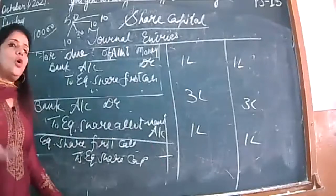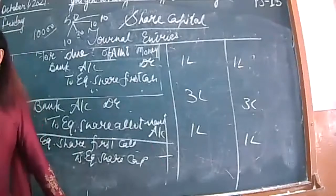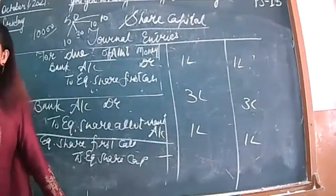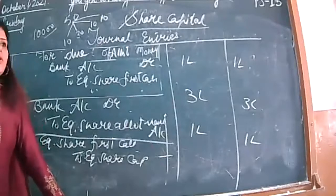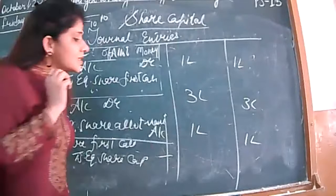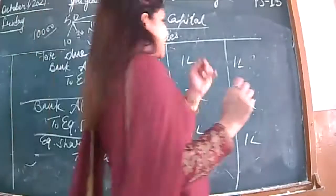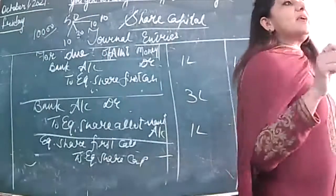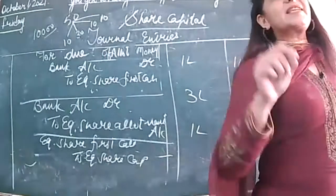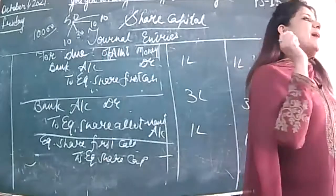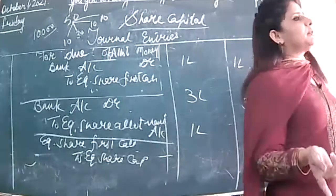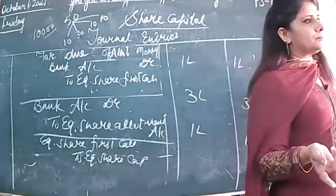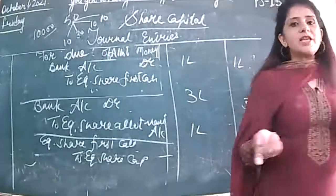Overall, there are 8 entries in which the question has been answered. Simple question: once due, once receive. The sequence also says that as shareholders apply for shares of the company, they will give you the application money. So the first application money is received, then it is due.